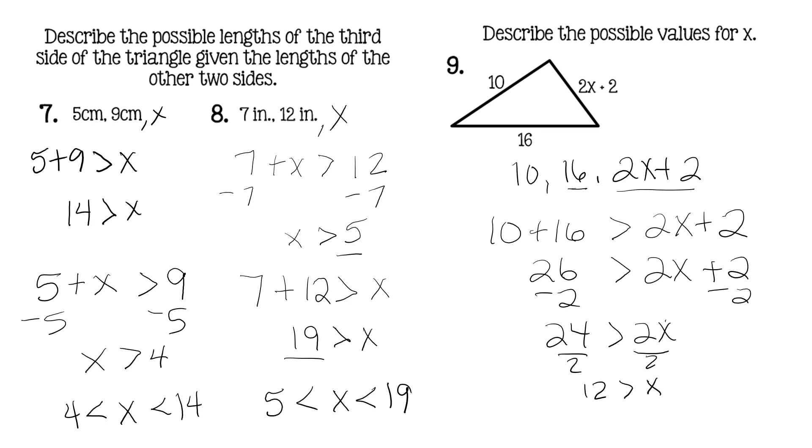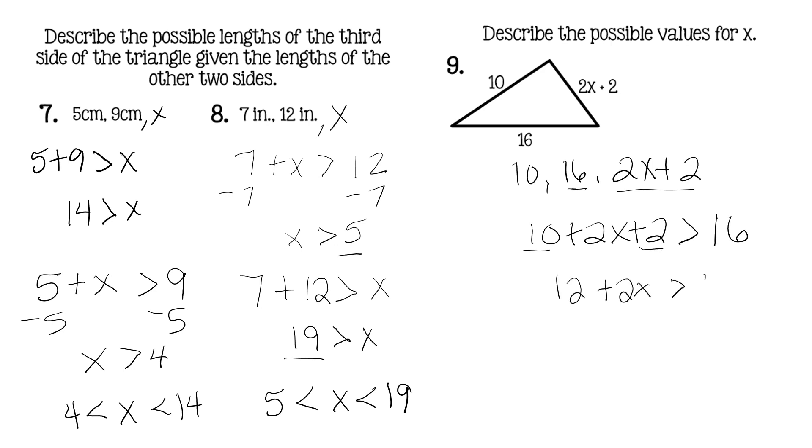So if we wanted to do a second example, I'm going to erase this to give myself room. So we're going to do the lower bound, saying that 16 is the largest side. So that would be 10 plus 2X plus 2, those are the two other sides, and where 16 is the largest. So those two added together would be greater than 16. Combine your like terms, so that's 12 plus 2X is greater than 16.